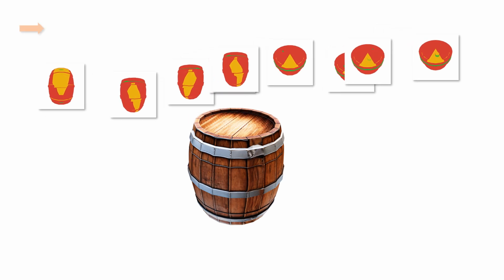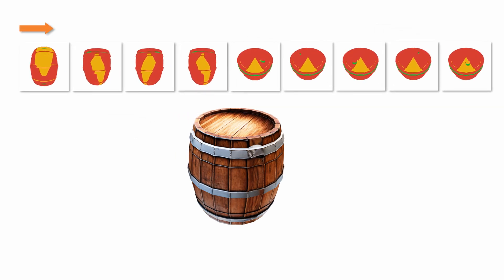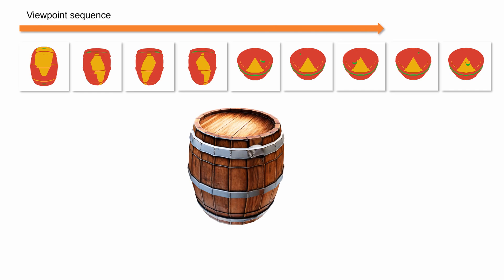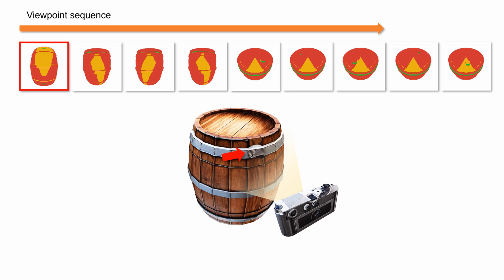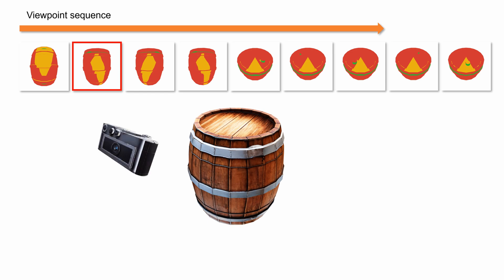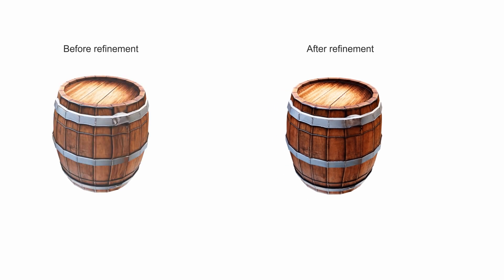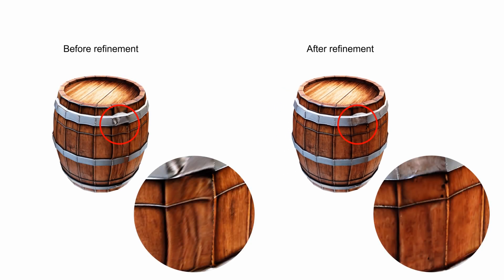To remove seams and stretching artifacts from the texture, we adopt a refinement technique. For a set of additional viewpoints, we render a generation mask for each view. We sort the viewpoints with respect to the area of the regions to be regenerated, and follow this sequence of viewpoints to iteratively refine the texture. This process results in a more consistent and smooth texture for the target geometry.